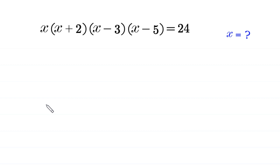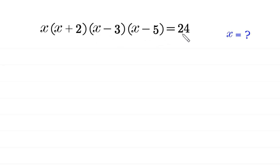Hello everyone, you are welcome to how to solve this very nice quartic equation: x times (x plus 2) times (x minus 3) times (x minus 5) is equal to 24. We need to find all possible values of x.